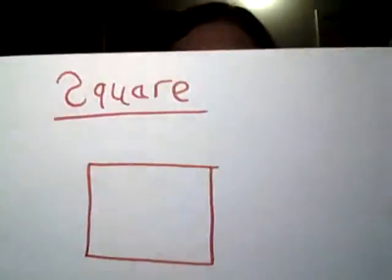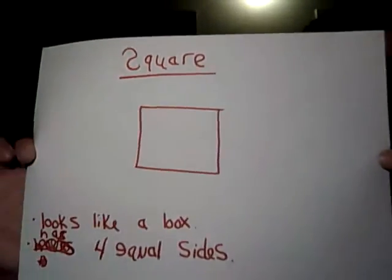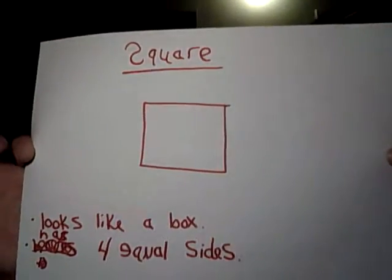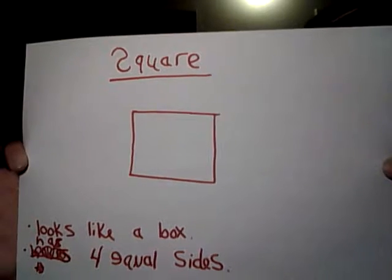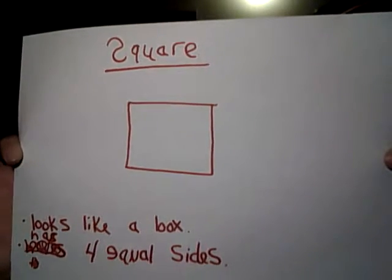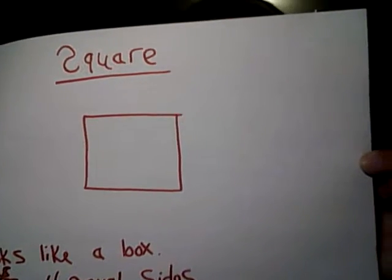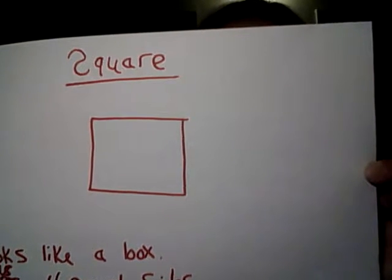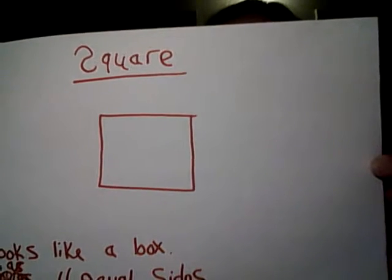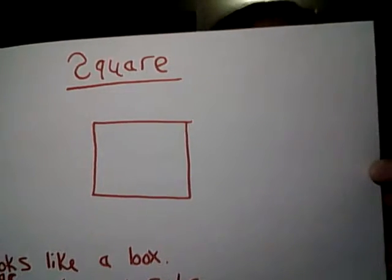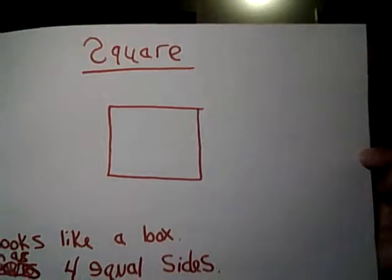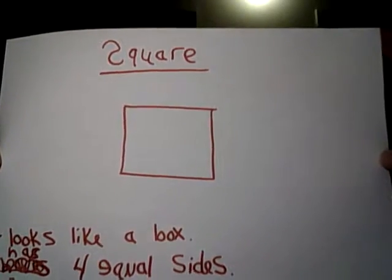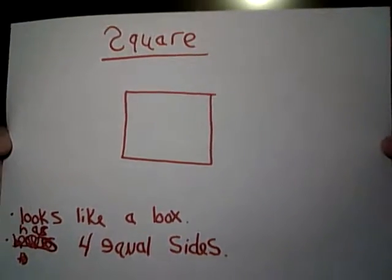Next, we have a square. As you can see here, this is what a square looks like. It kind of looks like a box, and the square has four sides to it. So underneath your triangle, or on a different piece of paper, you can write square.